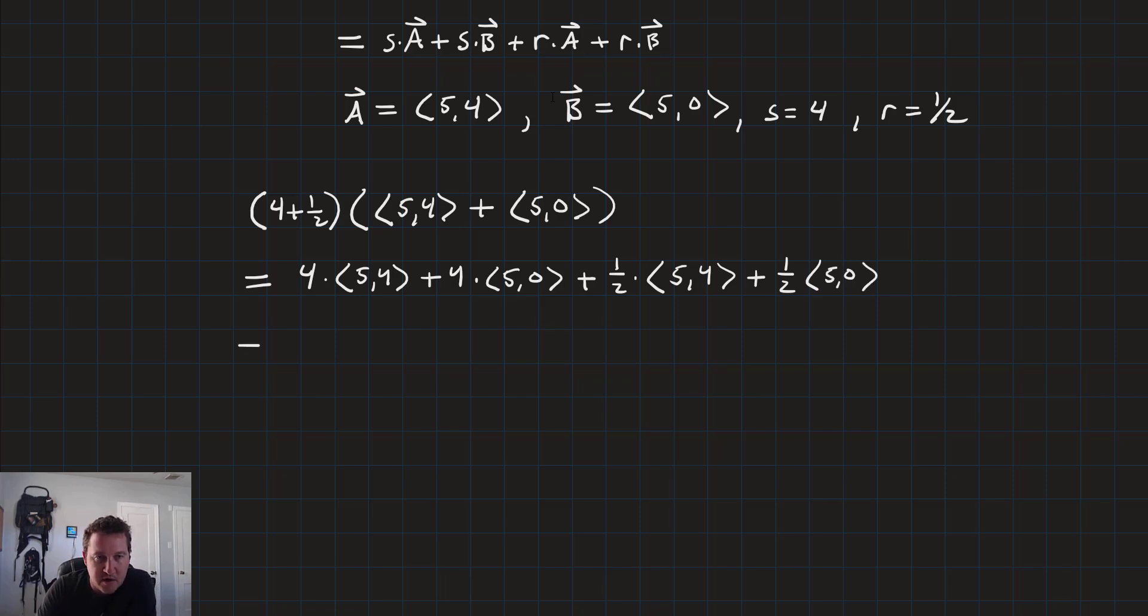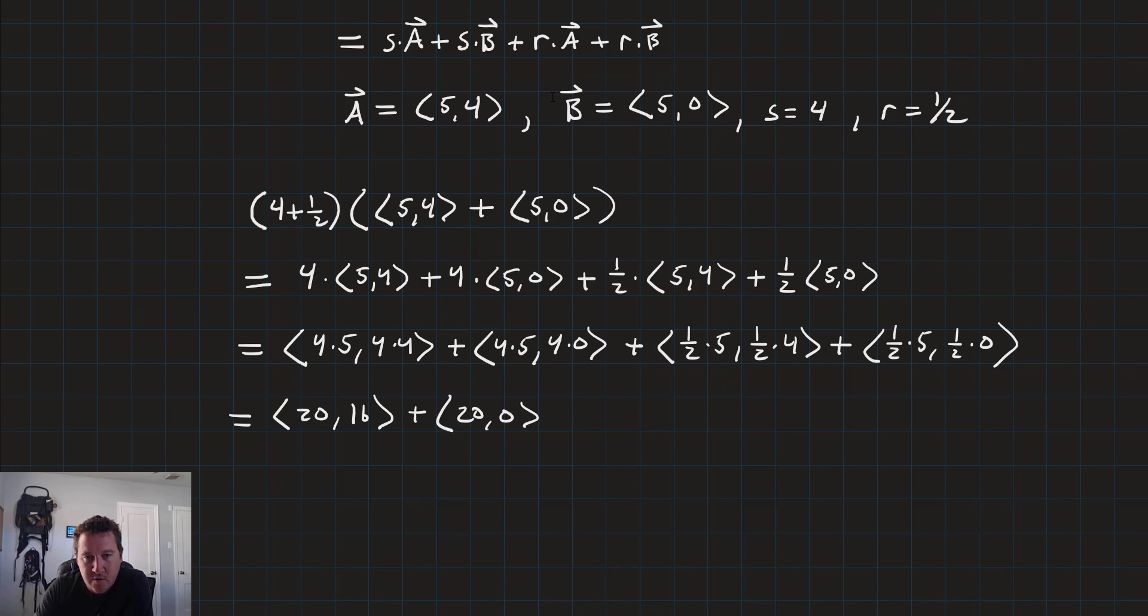Now the scalars distribute in and so we'll get vectors of 4 times 5 and 4 times 4 plus the vector with 4 times 5 and 4 times 0 plus the vector with 1 half times 5 and 1 half times 4 plus a vector with 1 half times 5 and 1 half times 0. Now we resolve all that arithmetic and we get vector with 20 and 16 plus a vector with 20 and 0 plus a vector with 5 halves and 2 plus a vector with 5 halves and 0.